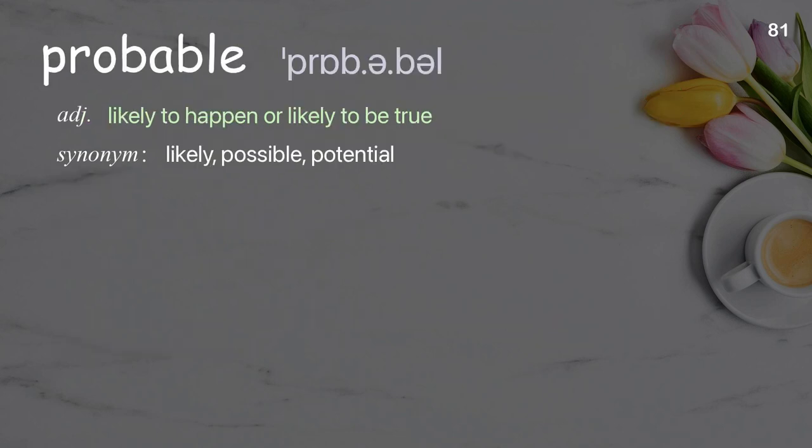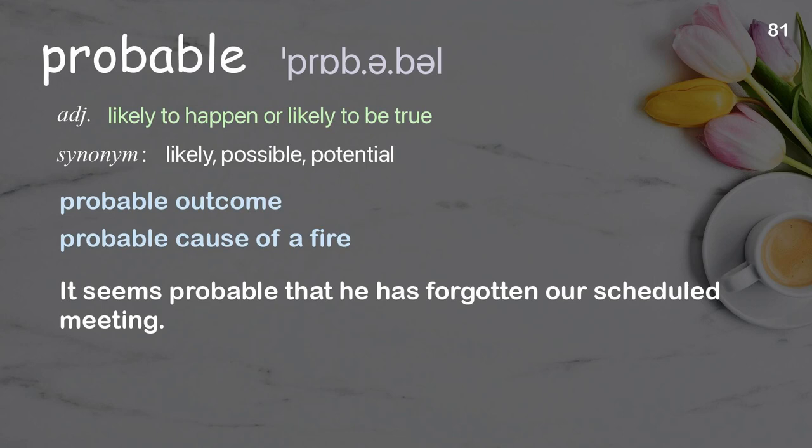Probable: likely to happen or likely to be true. Examples: probable outcome, probable cause of a fire. It seems probable that he has forgotten our scheduled meeting.